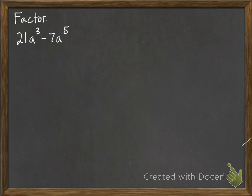Find the GCF for 21a³ minus 7a⁵. So when we look at the numbers, 21 and 7, we say 7 can go into both of those, and that's the biggest thing.